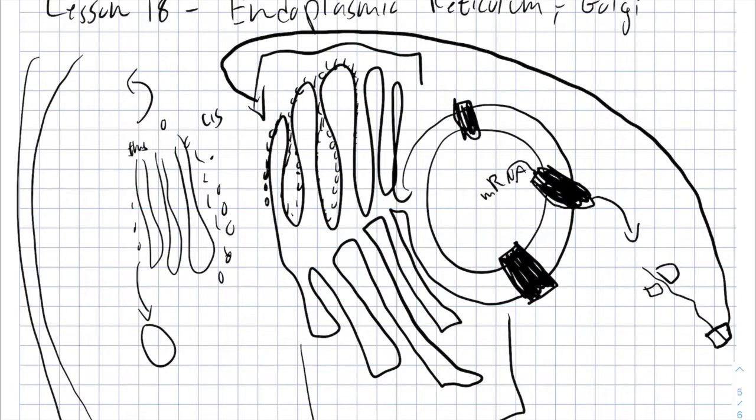In the rough ER, they will finish and complete the translation, and inside the rough ER, they will undergo certain post-translational modifications which will take them to the Golgi, and the Golgi will mark them to the different destinations they have to go.